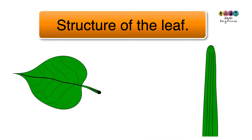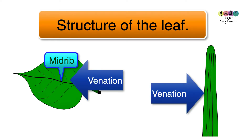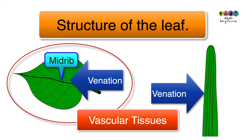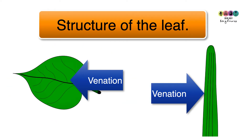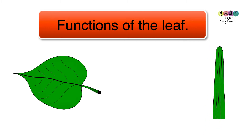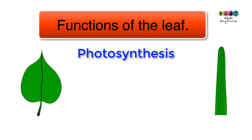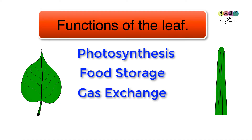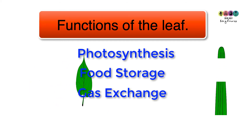Down through the middle of the leaf is the venation, leading directly from the petiole. The venation contains vascular tissue, and from the main vein smaller veins emerge. Venation can be in two patterns depending on the type of plant: netted or reticulate, or parallel. The functions of the leaf are: to make food by photosynthesis, to store food, gas exchange, and transpiration — the loss of water vapour from the undersurface of the leaf.